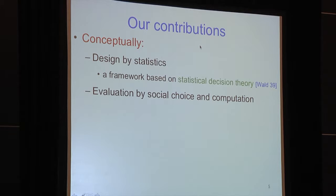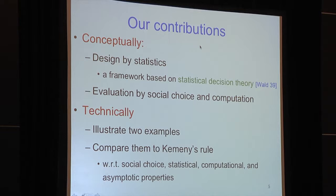Our contributions are: first, conceptually, we provide a new paradigm where we design mechanisms through the principled framework of statistical decision theory — formulated by Wald — and then evaluate the newly designed mechanisms with respect to social choice and computational aspects. Technically, we show two example mechanisms designed through our framework and compare them with the classical Kemeny rule on axiomatic properties, computational properties, and asymptotic properties. One of the mechanisms works well in nearly all aspects.